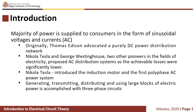Originally, Thomas Edison advocated a purely DC power distribution network. Nikola Tesla and George Westinghouse, two other pioneers in the field, proposed AC distribution systems as the achievable losses were significantly lower. During this time, there was a war between DC and AC. Thomas Edison, who highly discouraged AC power distribution, even electrocuted animals to show the dangers of AC power. Nikola Tesla, a very brilliant man, introduced the induction motor and the first polyphase system.